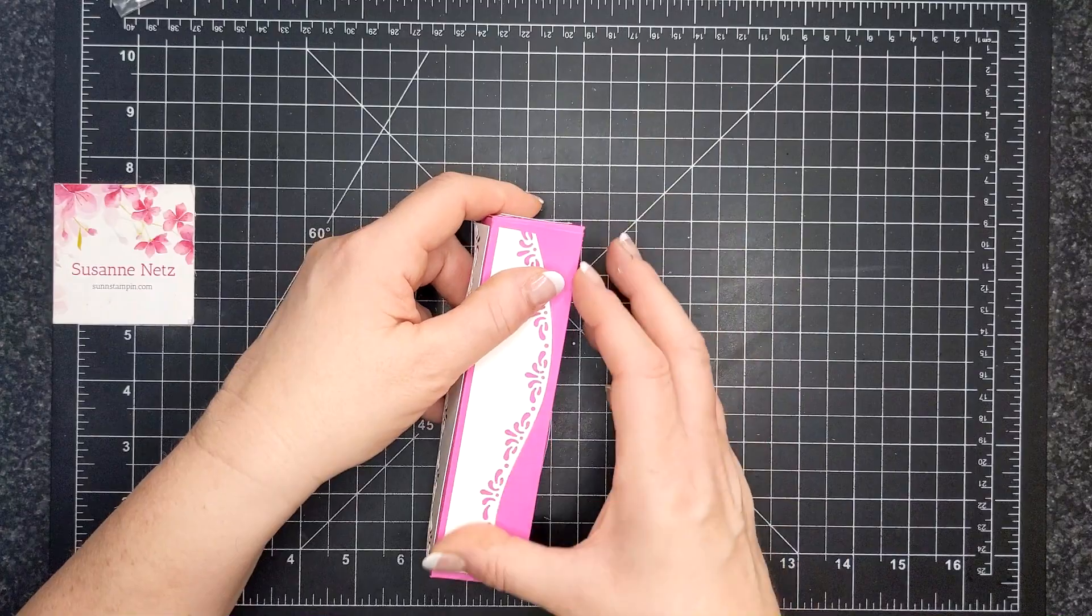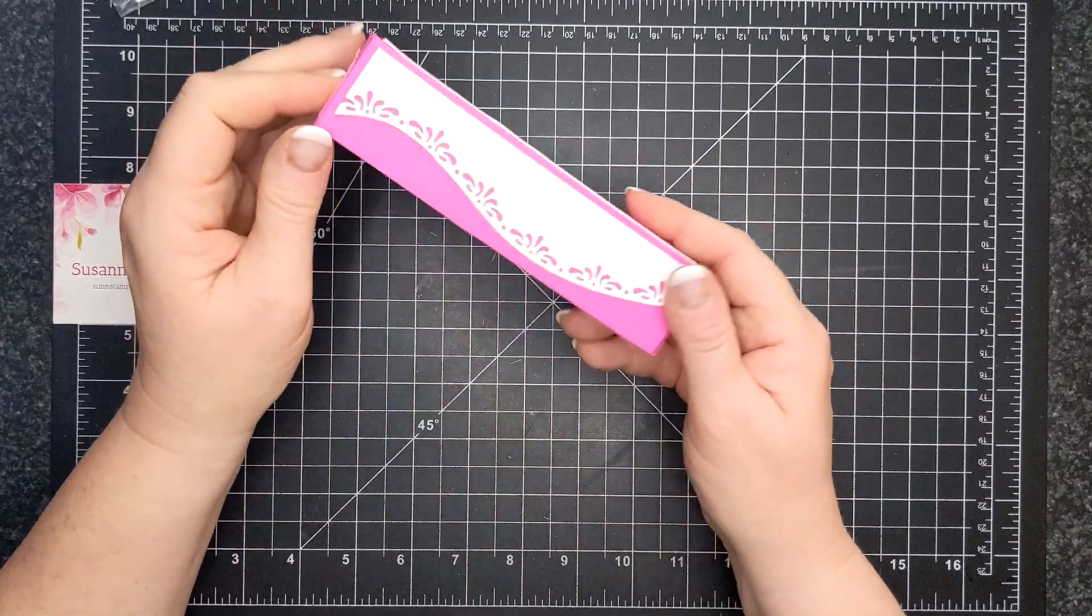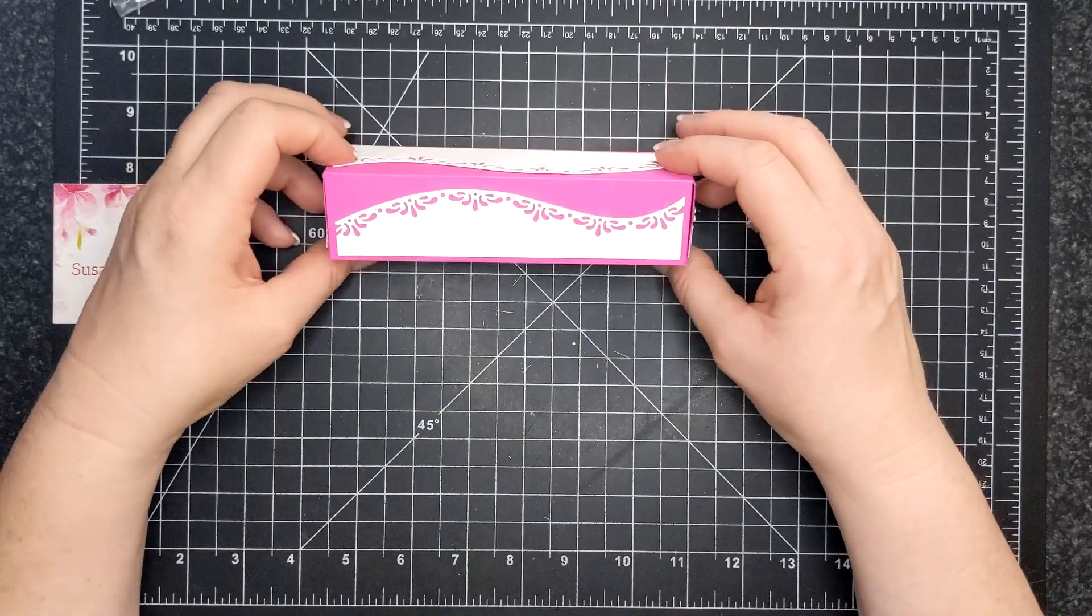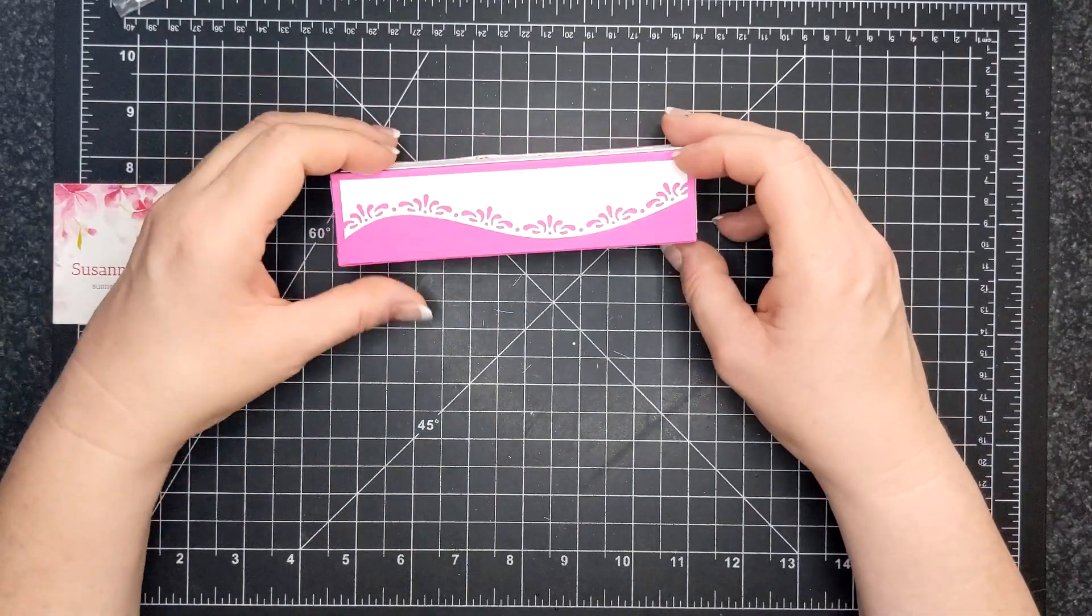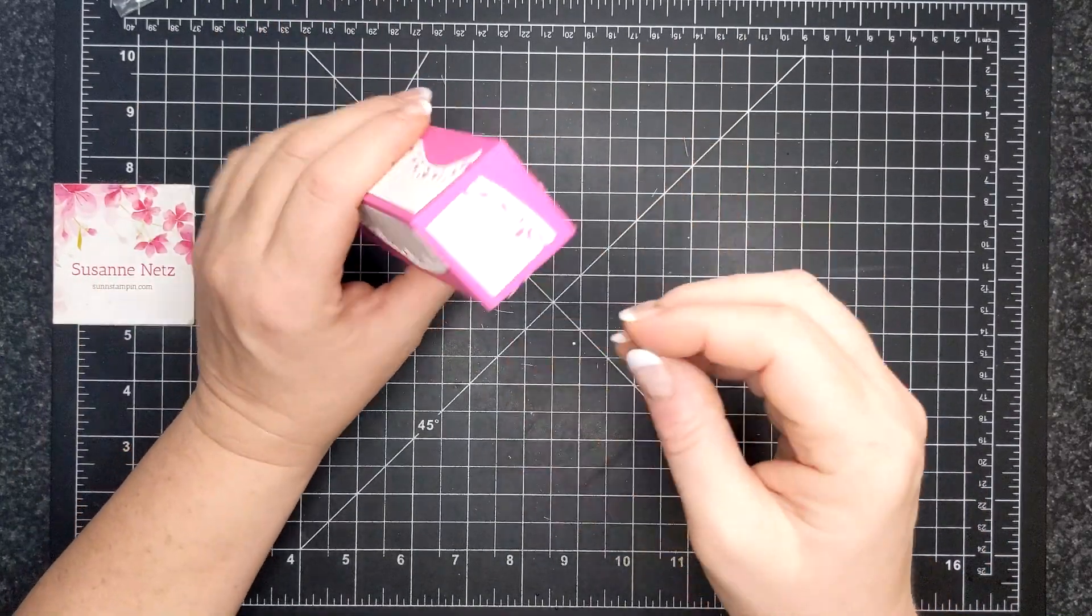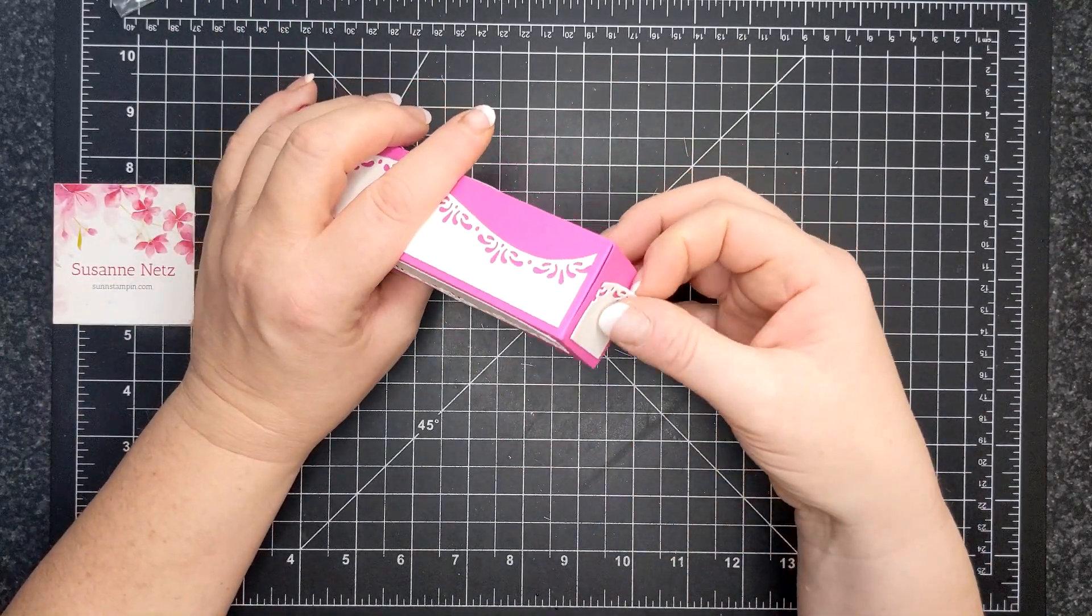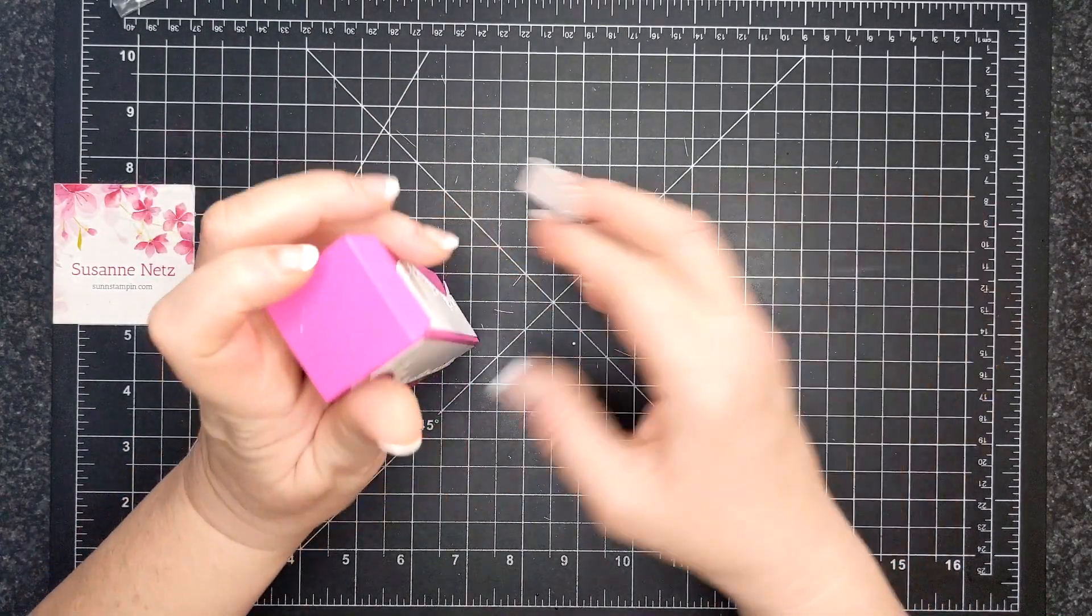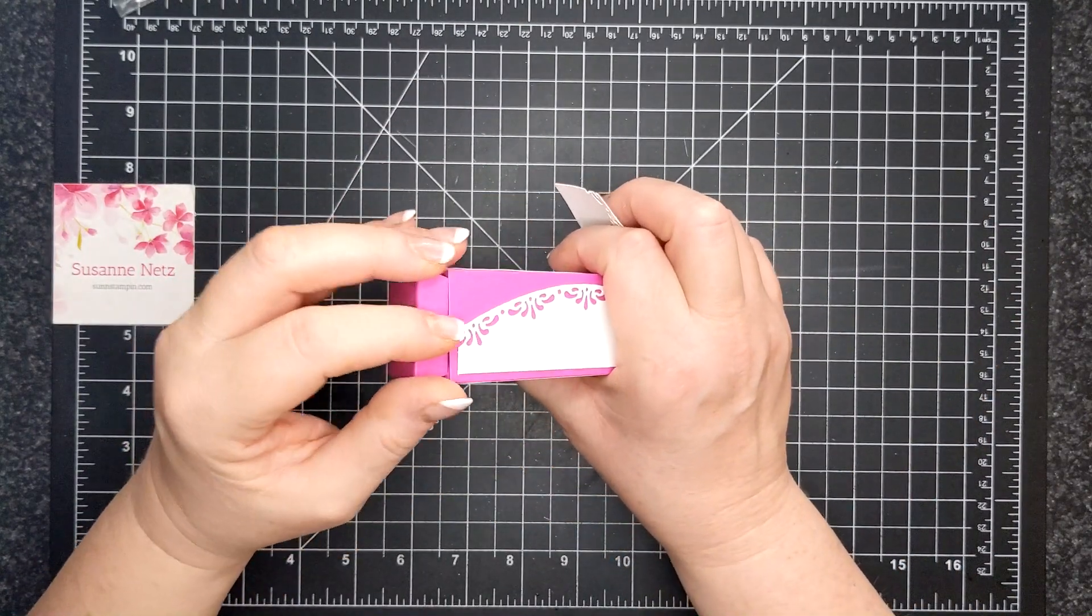Now, I don't have any of the Magenta Madness ribbon, but that would go so nicely here. If you wanted to, you could just leave this box like such. Or, you know, you don't have to necessarily. I actually like it without.